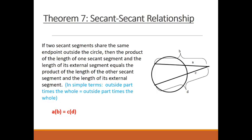So backing up, that means I'm going to try to color code this. The outside part A times the whole thing B, A times B equals the outside part C times the whole thing, which is D. Outside part times whole equals outside part times whole. We're not going to prove that right now. It's a little bit beyond the scope of this video.